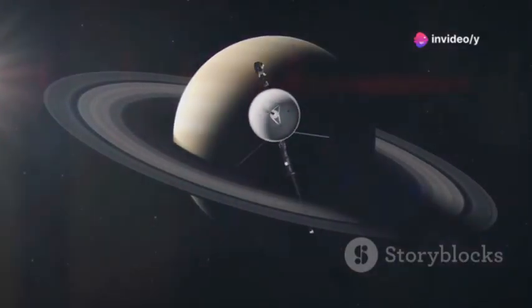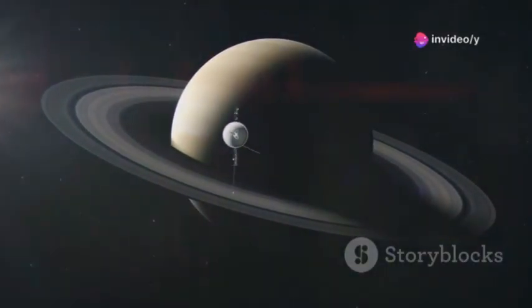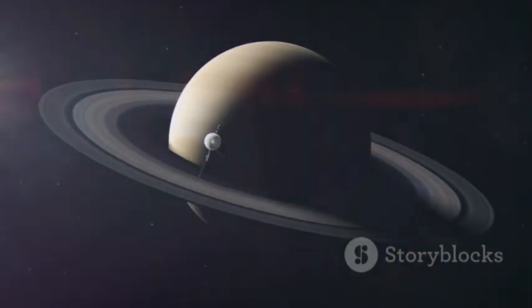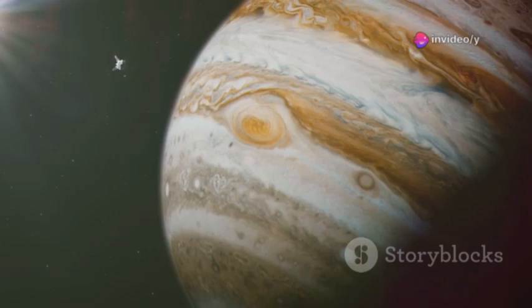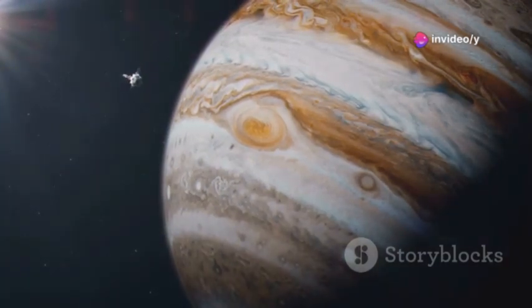NASA designed two probes, Voyager 1 and Voyager 2, to explore these distant worlds up close for the first time. Voyager 2 launched first, packed with instruments to see, measure, and listen. Its journey began with Jupiter in 1979 revealing violent storms and new moons.